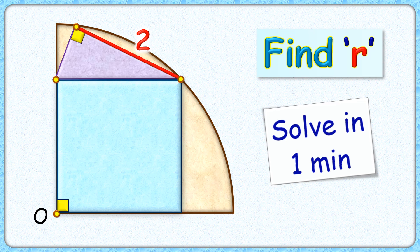This interesting question given to us shows a square and right angle triangle inside a quadrant. Also, one of the side lengths of the right angle triangle is 2 centimeters.